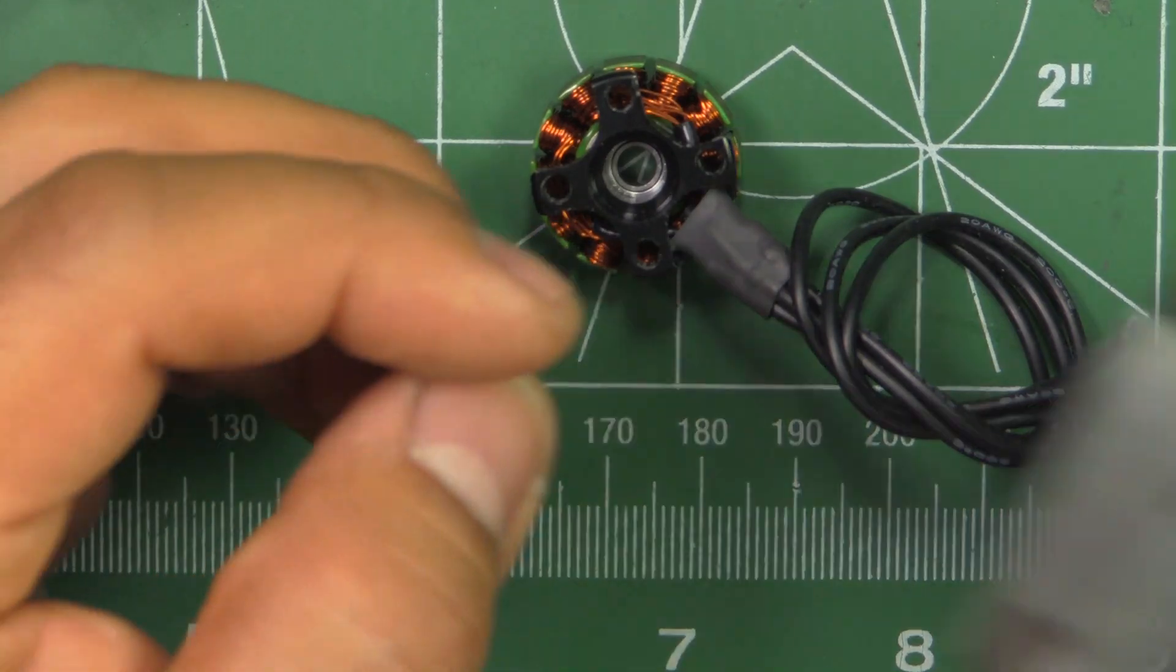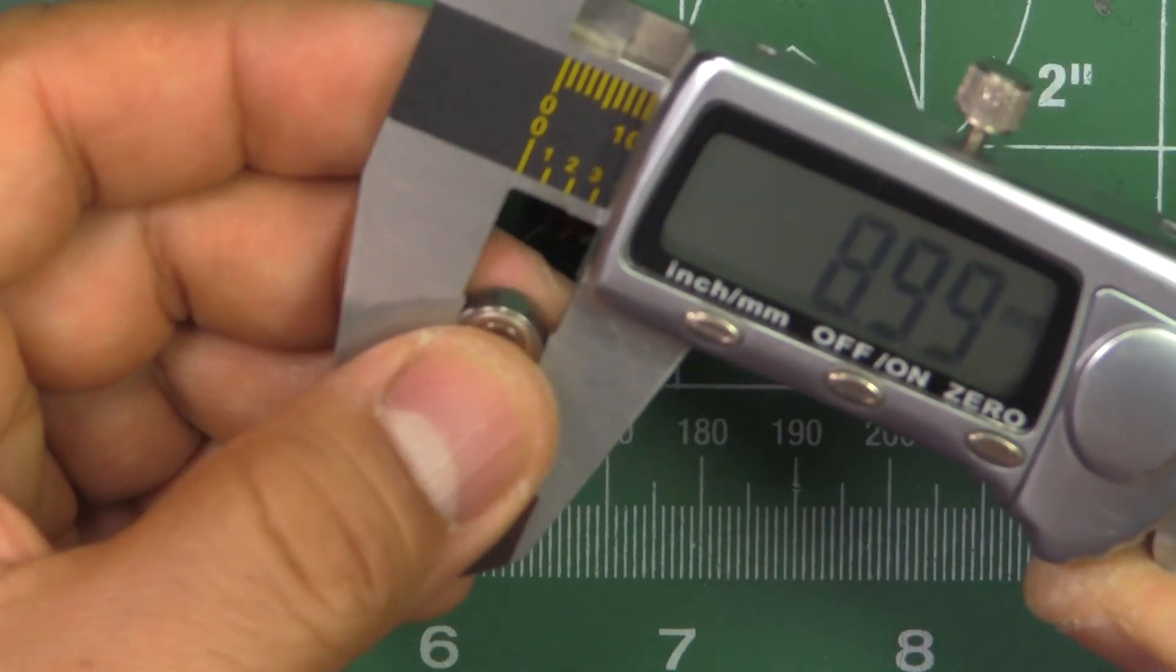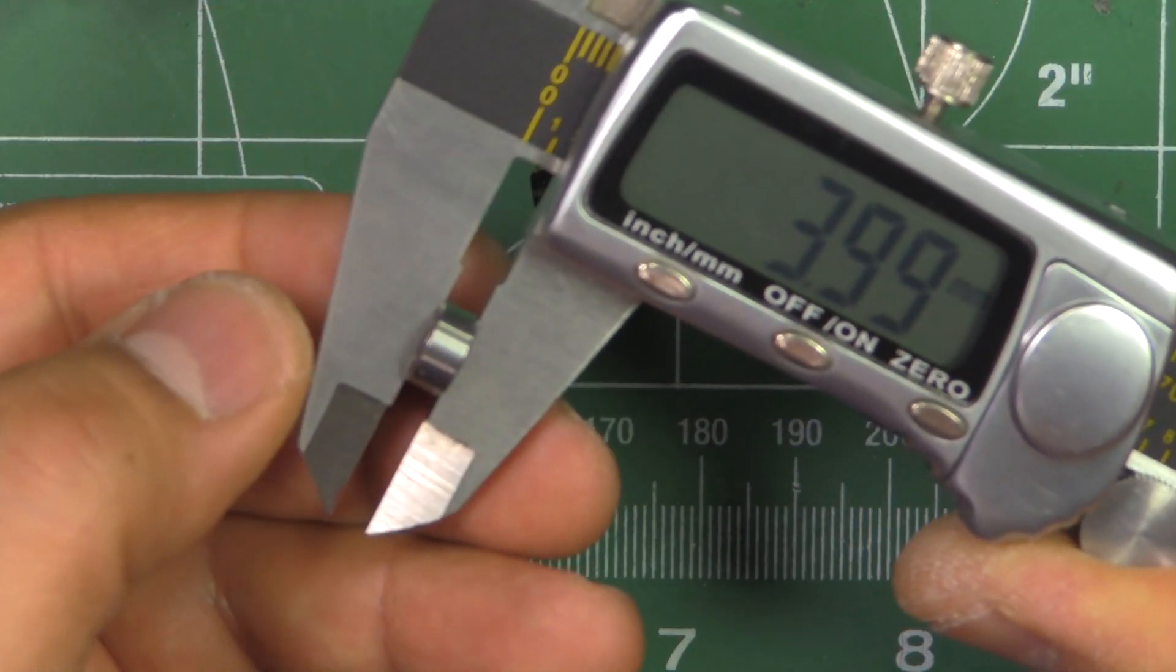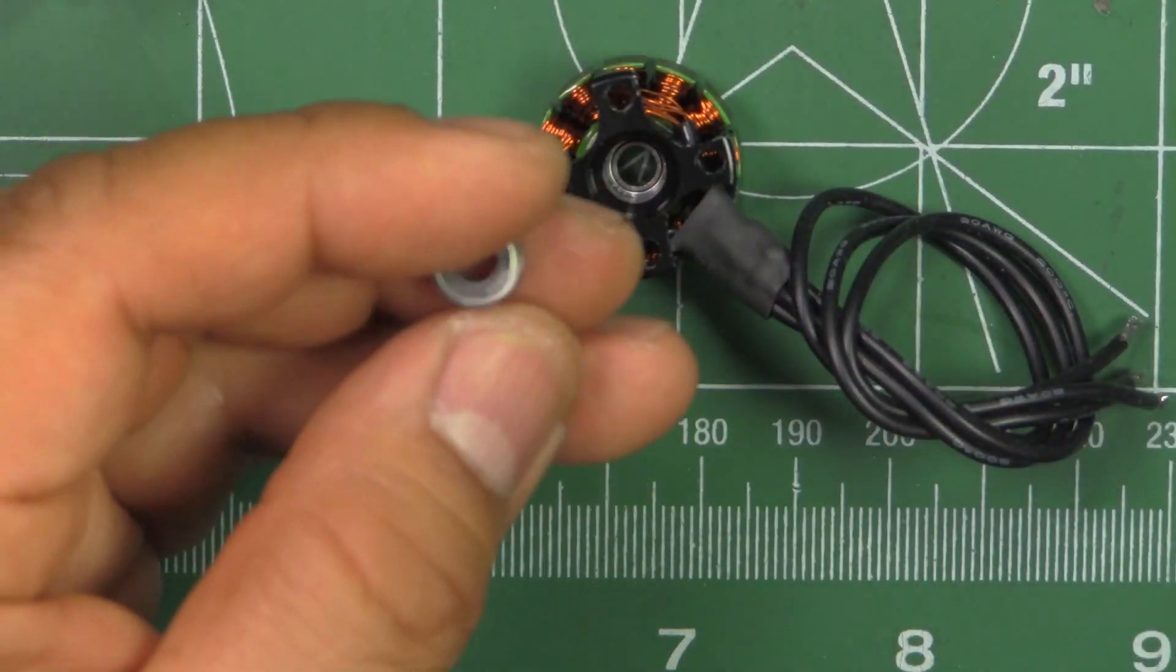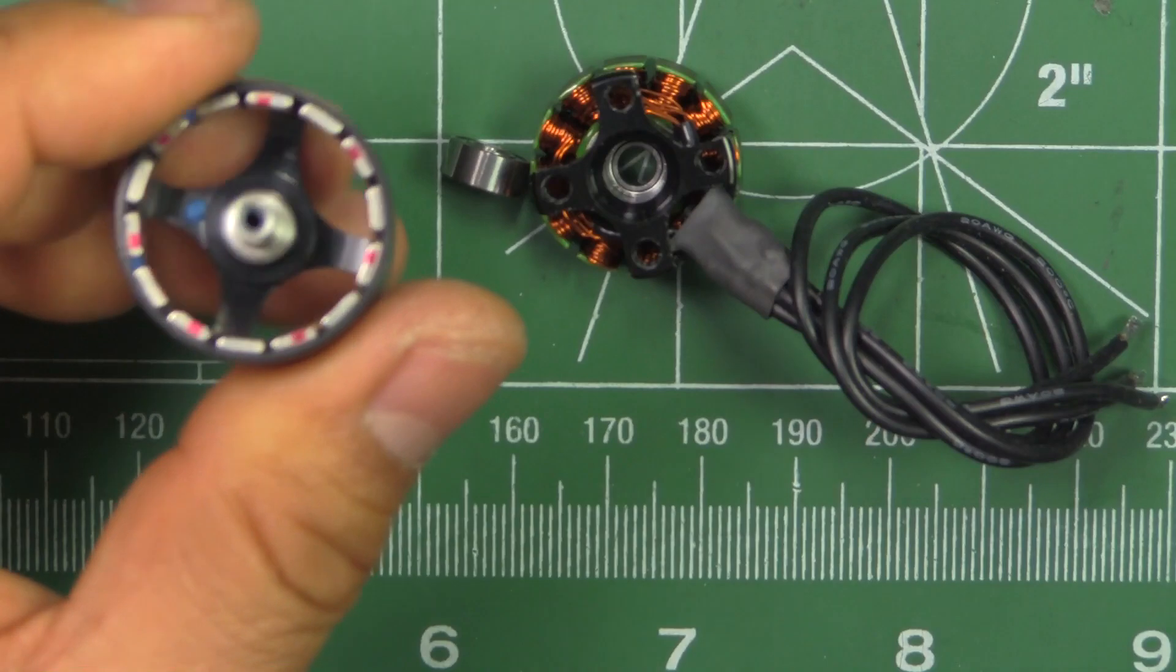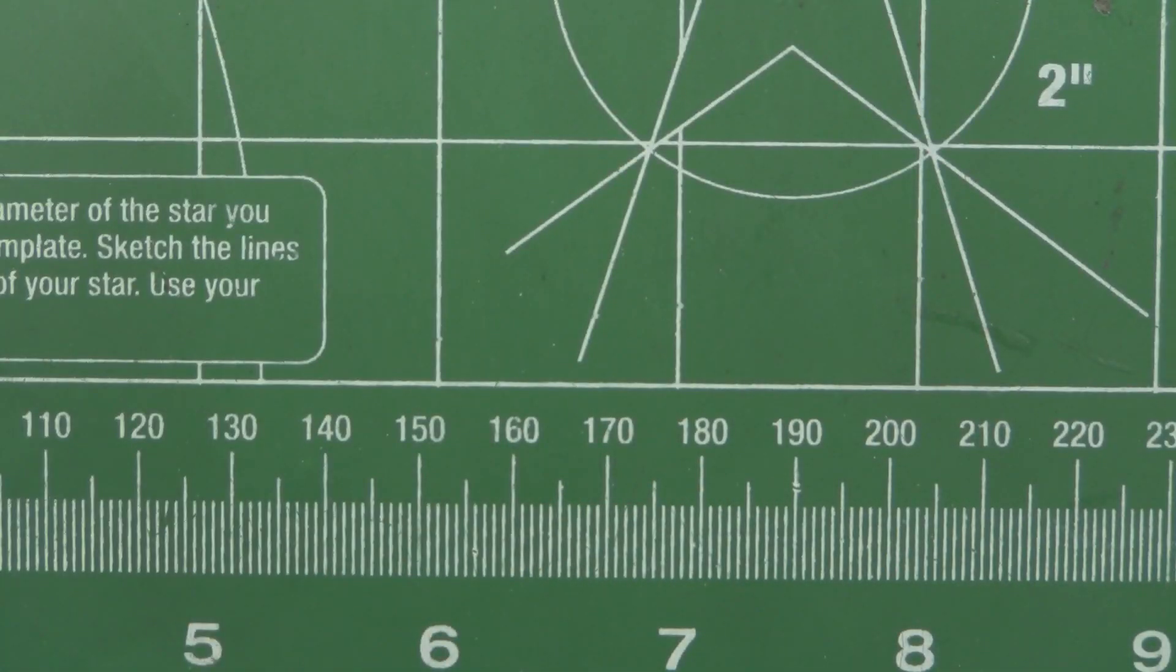So this one is, as you can see, this is a 9 millimeter by 4, it's the width, 4 millimeters. And the shaft of course is 4 millimeters. So let's look at it on the magnifying glass. Let's get a closer look.